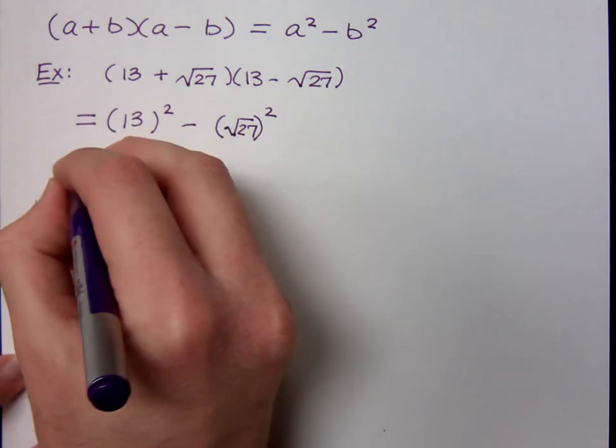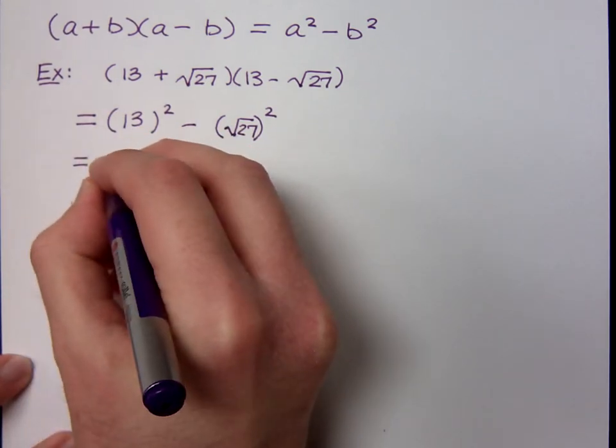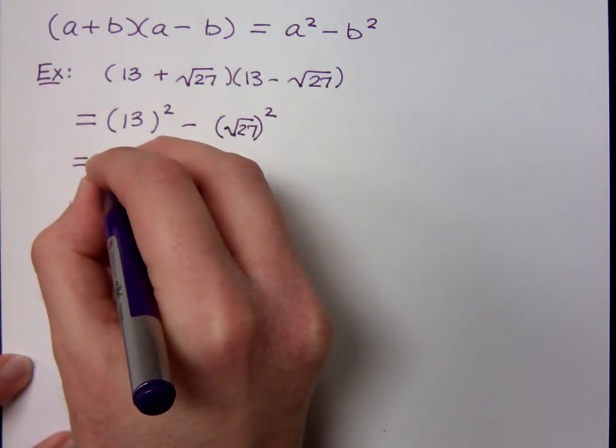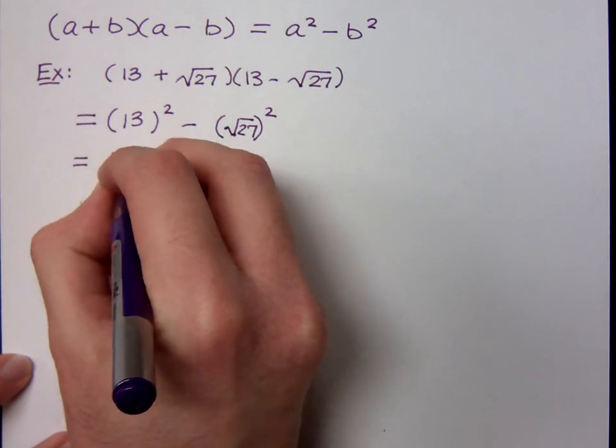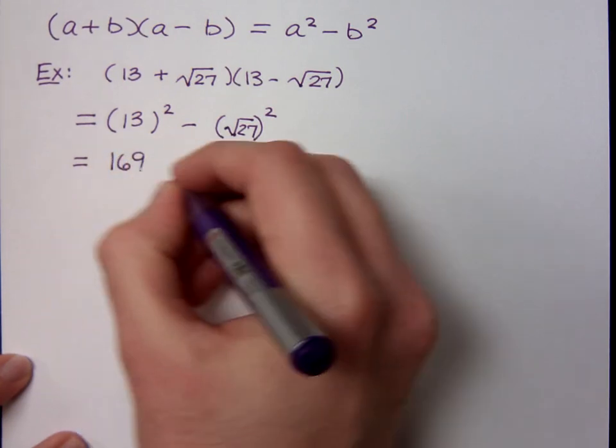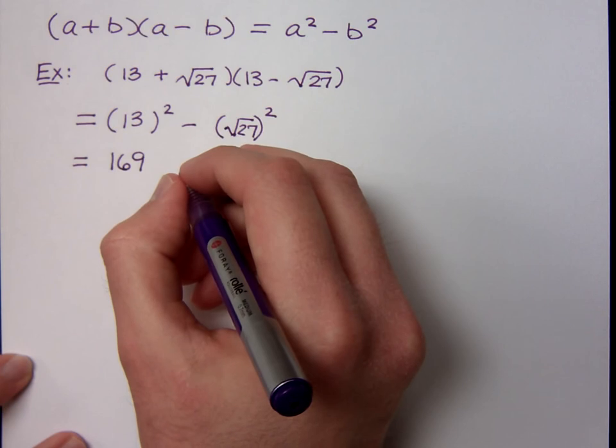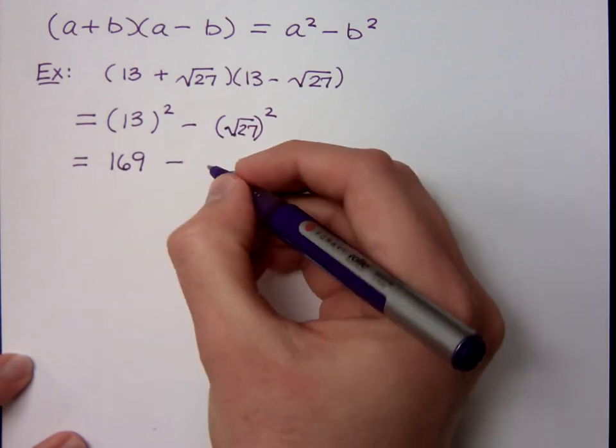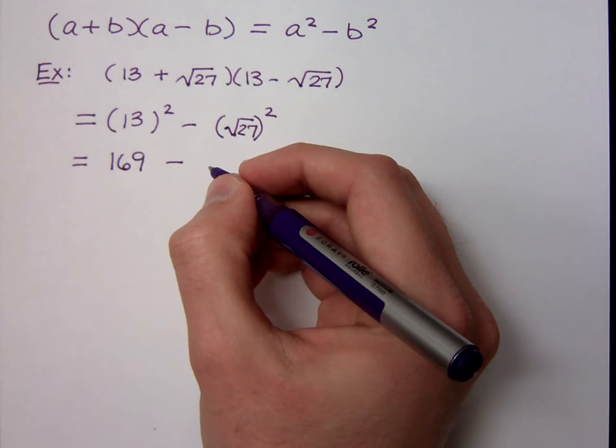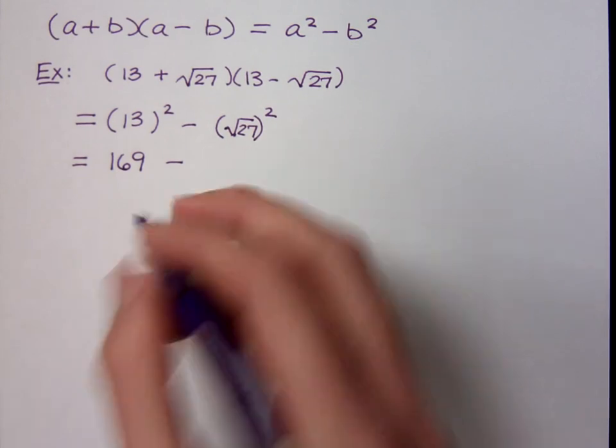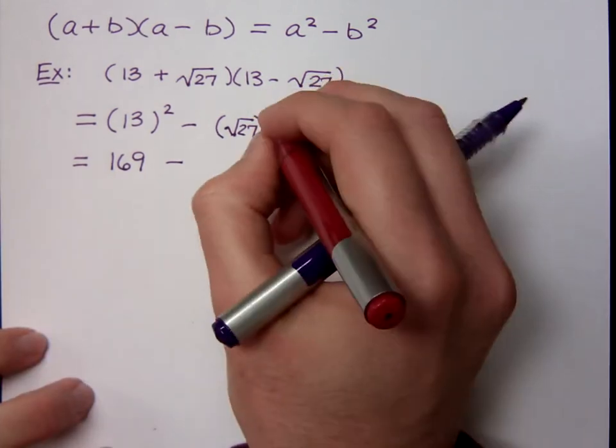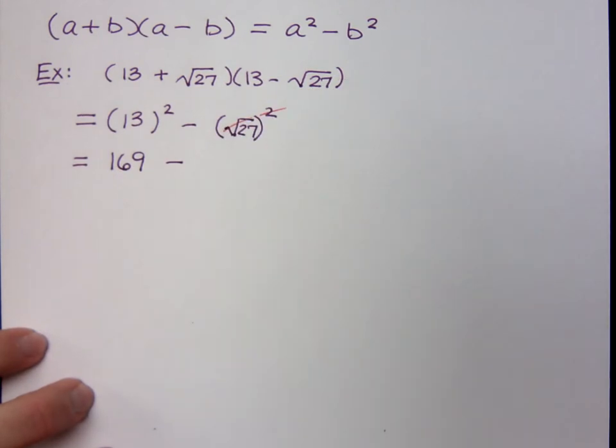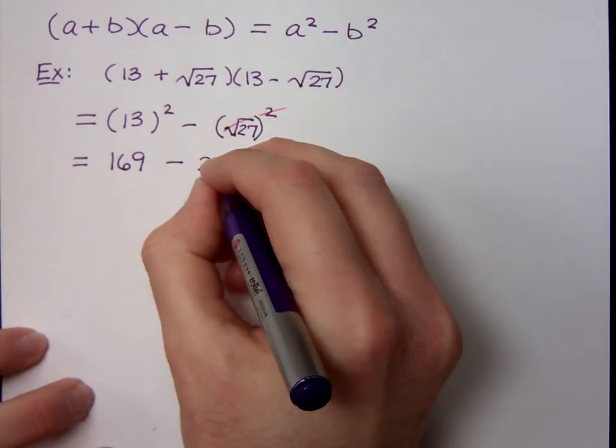So then what's 13 squared? A number. Real numbers. All of these are real numbers. Only one of you can be Captain Obvious today. 13 squared is 169. What happens when you square the square root of 27? That guy's going to basically cancel each other out. These are inverse operations, and you end up with just 27, right? Awesome.